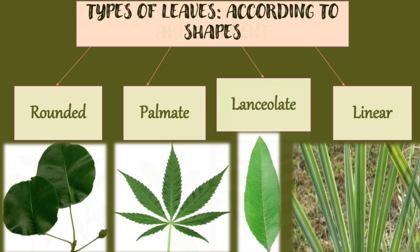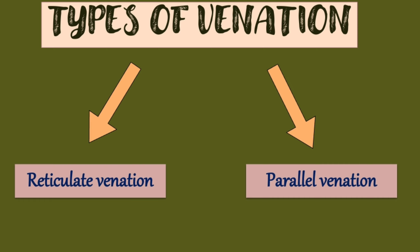According to shape, there are four types of leaves: rounded, palmate, lanceolate, and linear. According to the type of venation — how veins are present on the leaves — leaves are divided into two types: reticulate venation and parallel venation.